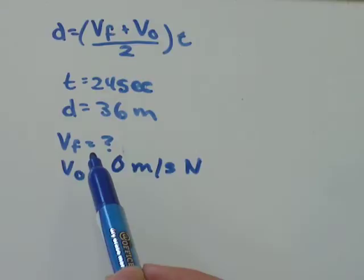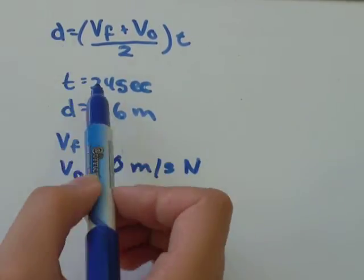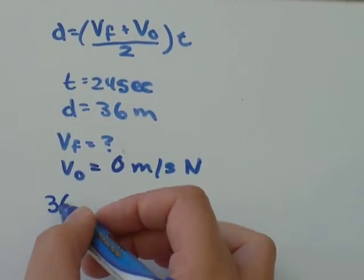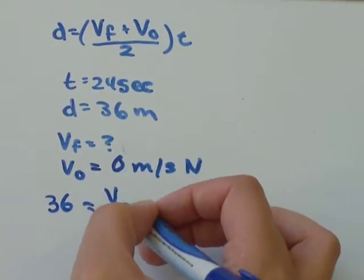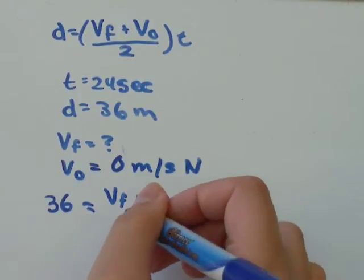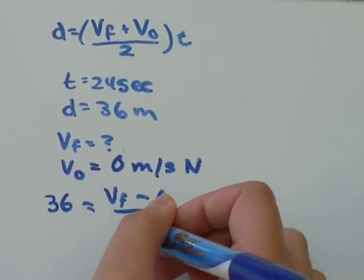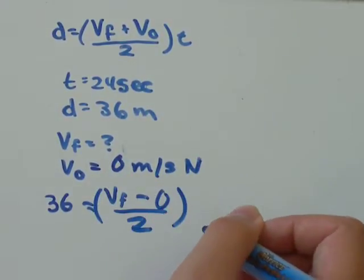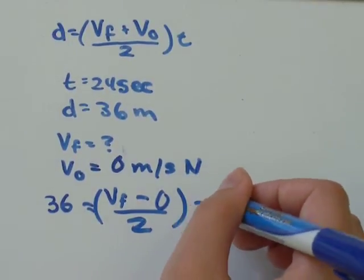Now you just need to plug it into the formula. Displacement was 36 meters. VF, we don't know. Minus V0 was 0. Divided by 2. And then multiplied by time. Time was 24 seconds.